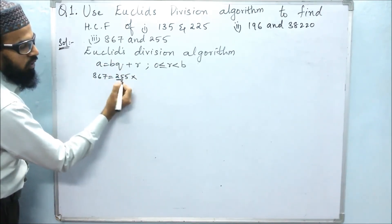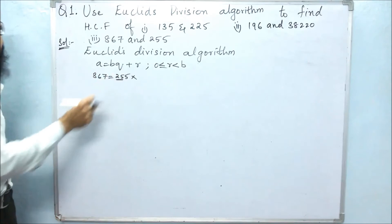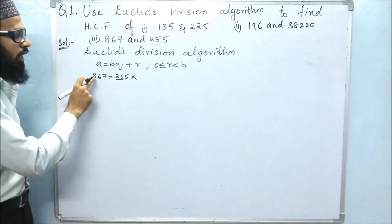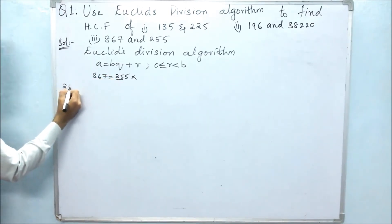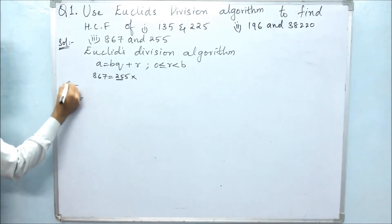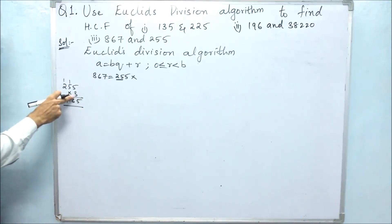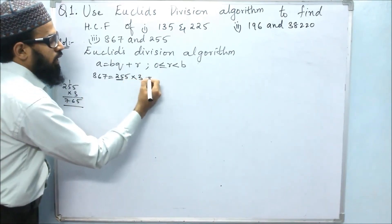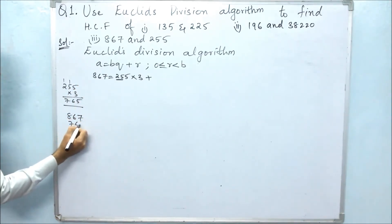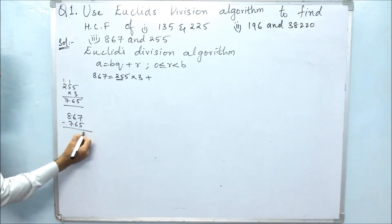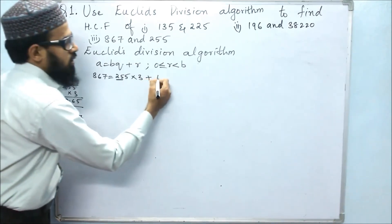Looking at the first two digits, we focus on 25. In the 25 table, the nearest number to 86 is 75 (25 threes). So we multiply 255 by 3: 3 times 5 is 15, carry 1; 3 times 5 is 15 plus 1 is 16, carry 1; 3 times 2 is 6 plus 1 is 7. So 255 times 3 is 765. Subtracting 867 minus 765: 7 minus 5 is 2, 6 minus 6 is 0, 8 minus 7 is 1. The remainder is 102.